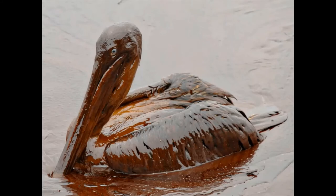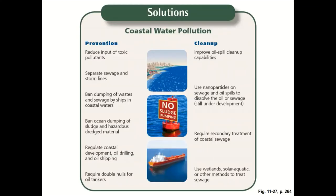What are our solutions? Number one: prevention, prevention, prevention. Reduce our input of toxic pollutants. Separate sewage and storm lines — don't let the two intermingle. Have protections in place to prevent them from overflowing in a storm surge. Ban dumping of waste and sewage by ships in coastal waters — think about where all the waste goes when you're on a cruise ship. They don't store it all on the boat.